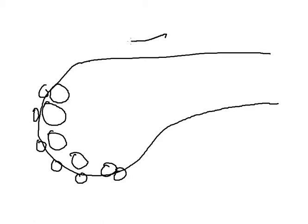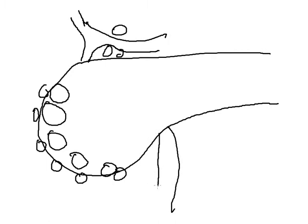The second station nodes are along the common hepatic artery, which can be seen in this area, and along the superior mesenteric artery. So these are second station nodes along with hepatoduodenal nodes.